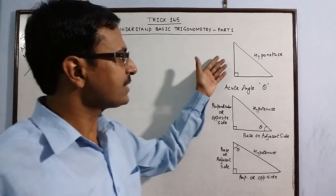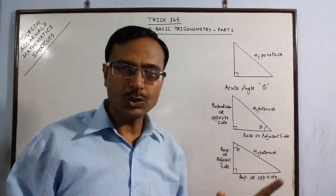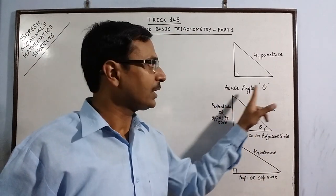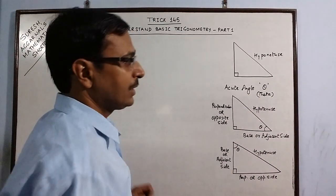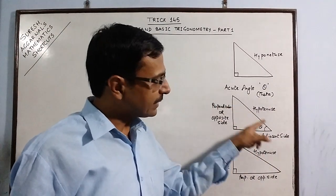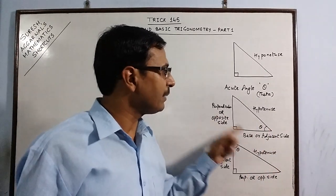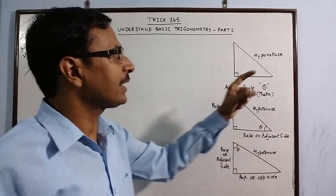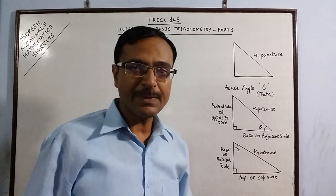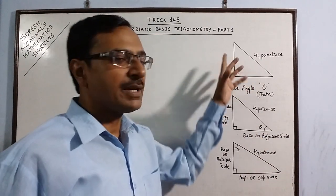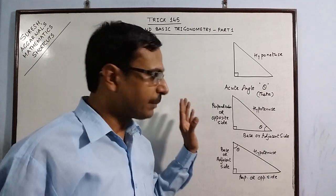We will first understand the concept of a right angle triangle, because in a right angle triangle one angle is 90 degrees and the other two angles are acute. In trigonometry, the acute angle is denoted by theta. When we consider one of the two acute angles, that angle fixes the perpendicular and the base of the right angle triangle. The hypotenuse is fixed as the side opposite to 90 degrees, but the remaining two sides need to be named as base and perpendicular.